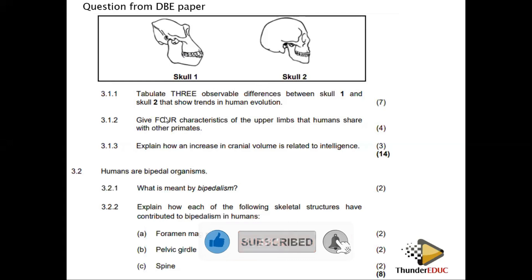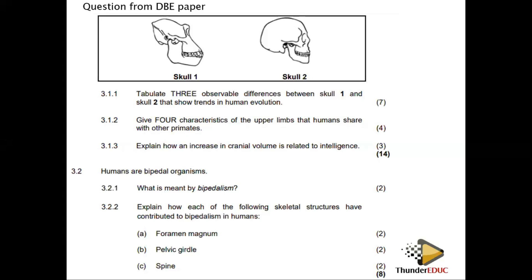Question two: give four characteristics of the upper limb that humans share with other primates. Upper limb only: opposable thumbs, flat nails instead of claws, and free rotating arms. Make sure you read the question carefully — they are asking about the upper limb specifically, not about sexual dimorphism or other traits.